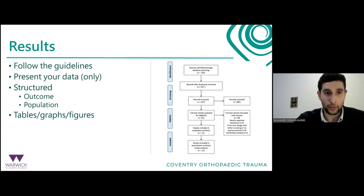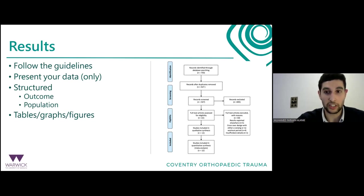The results section is probably the easier part to write. Follow the guidelines on the Equator Network for presenting the results of that specific paper type. Present the data, but structure it — for example, by outcome: revision for infection, loosening, dislocation; or by population: under or over 65 years of age. In your results section, there is no interpretation — don't try to interpret the data, just present the facts. The interpretation is what you do in the discussion section.